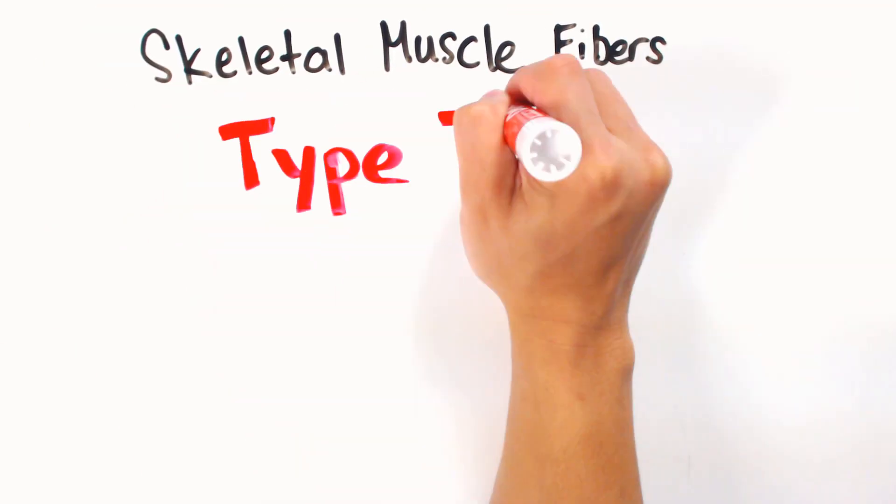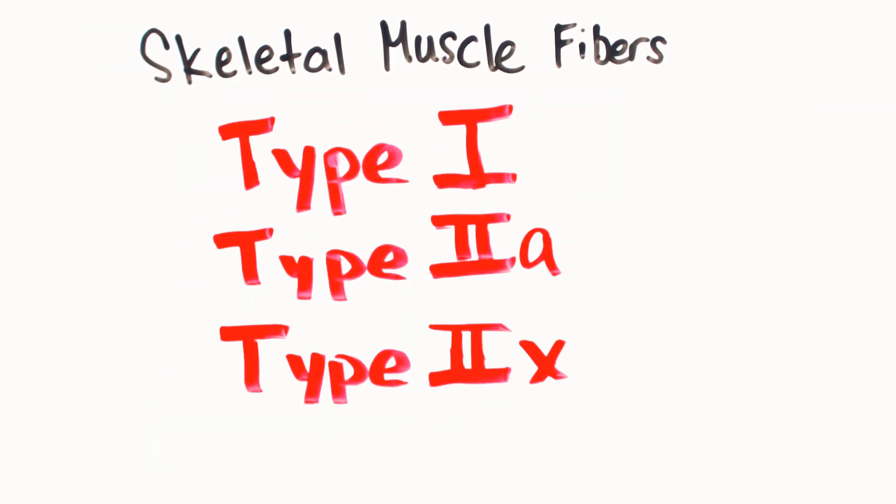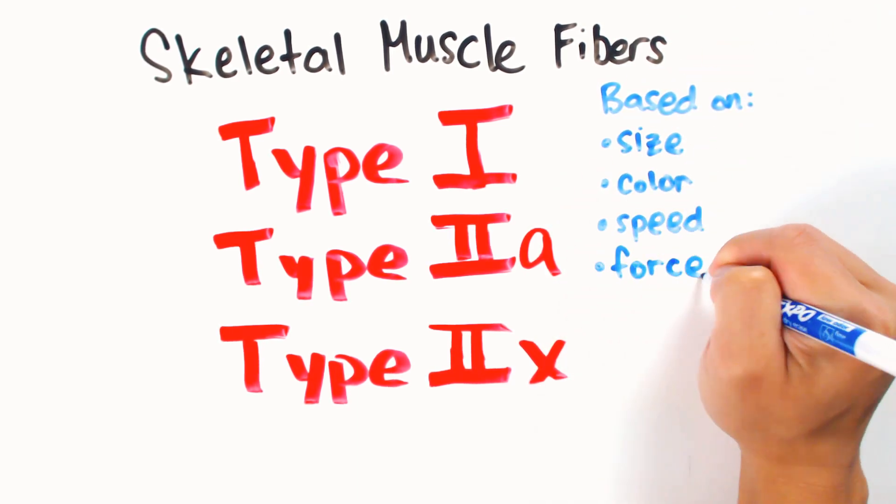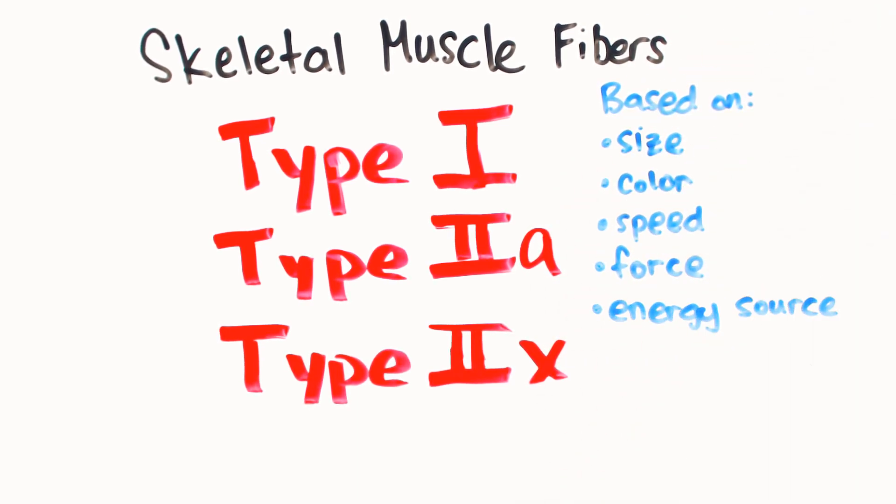There are three different skeletal muscle fiber types, known as Type 1, Type 2a, and Type 2x fibers. The difference of size, color, contractual speed, contractual force, and energy source classifies each fiber.